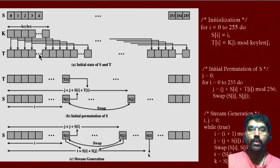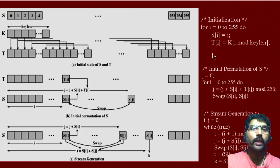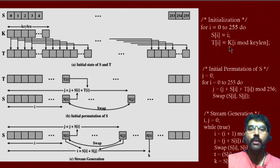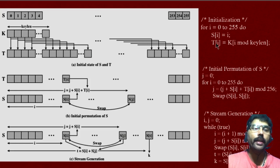The next process is called initialization of S and T, explained by this algorithm. A loop runs from 0 to 255: the first statement assigns values 0 to 255 to the state vector S, and the temporary vector T is initialized with the key value, repeated as necessary.